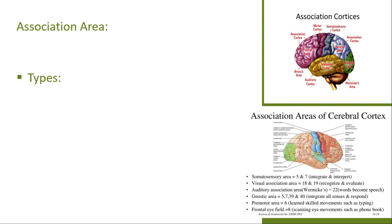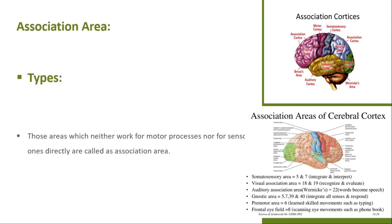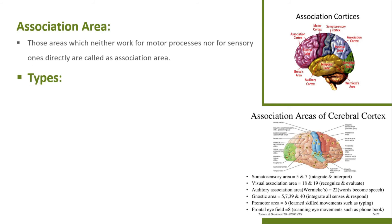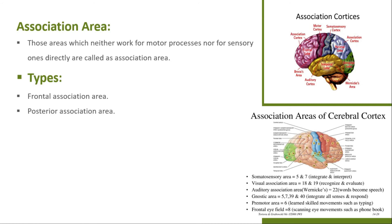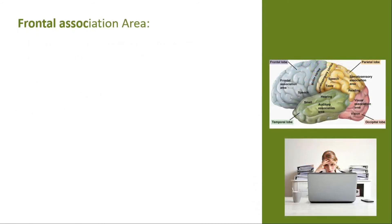Hello everyone and welcome back to my channel. Today's video is about the frontal association area and the posterior association area. The other cerebral cortex areas, which are not directly involved in somatosensory and motor processes, are called association areas. Association areas are of two types: the frontal association area and the posterior association area.